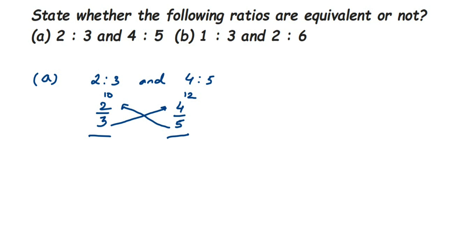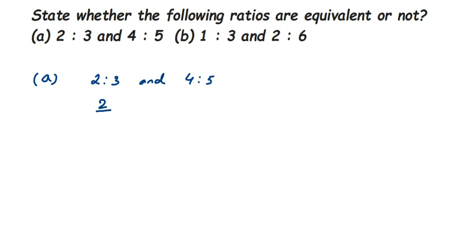Now if we have to show the answer in two to three steps, we take the LCM method. We have 2 is to 3 and 4 is to 5, which can be written as 2/3 and 4/5. Since they are in fraction form, we compare them like fractions — take the LCM of the denominators. The denominators are 3 and 5, which are not the same, so we take the LCM of 3 and 5, which is 15.